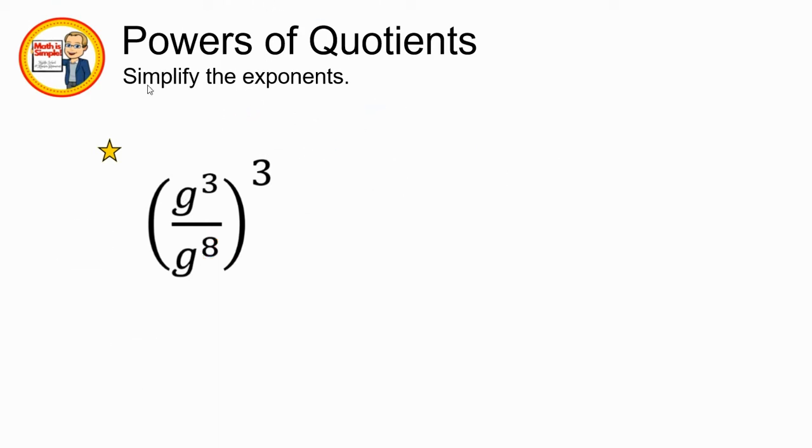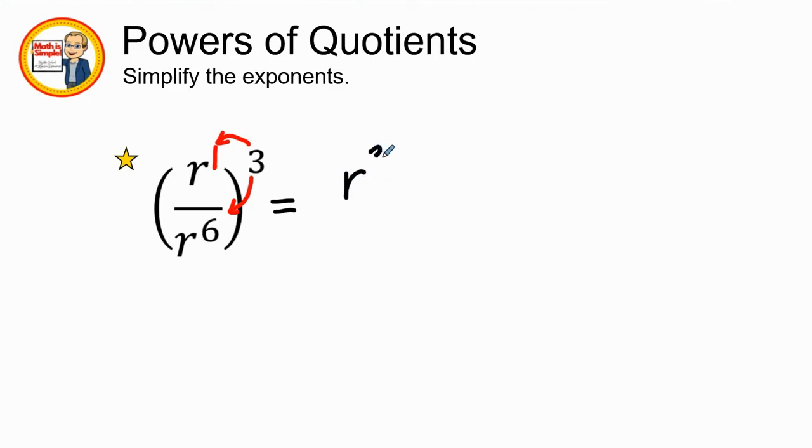Last example. This shows me that I have r to the first power over r to the 6th. Let's do distributive property this time. I'm going to distribute the numerator and the denominator, which gives me r to the third power over r to the 18th power. I still can simplify because I have the same variable in the numerator and the denominator. Therefore, which is my largest number, 18, and 18 minus 3 is 15. My final answer is 1 over r to the 15th power.